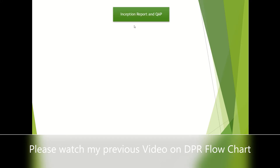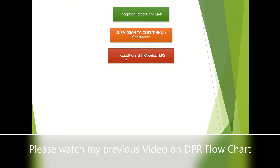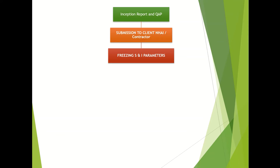In this video, I will explain the flowchart of DPR, the second part. Once the inception report and quality assurance plan has been done, this is the next step in the DPR flowchart. Once these reports have been submitted, we have to freeze some parameters - the scope and investigations. What are the investigations? The starting point, ending point, and various parameters you have to freeze first before doing any further investigations. You also have to continuously discuss with the client and get approval for the further process.